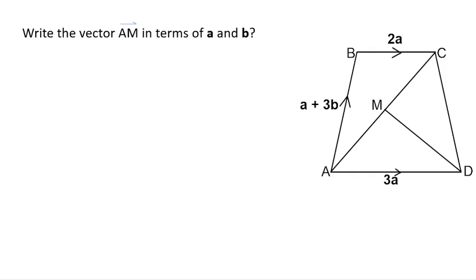So write the vector AM in terms of a and b. And as a reminder, A to M is half of A to C because M is the midpoint. Okay, so pause, have a go, press play when you're ready to continue.